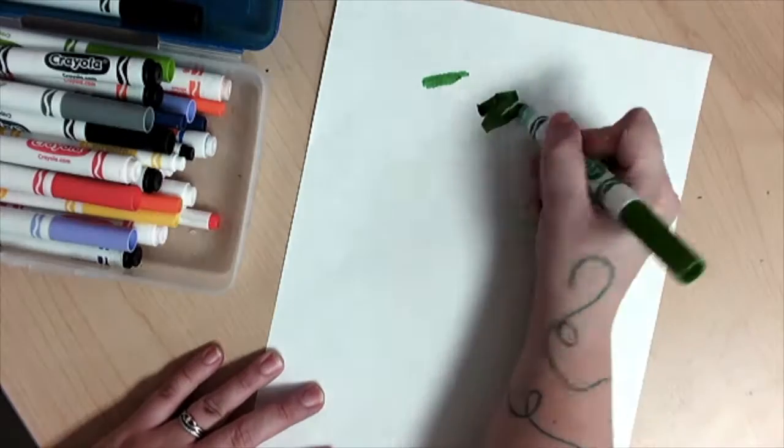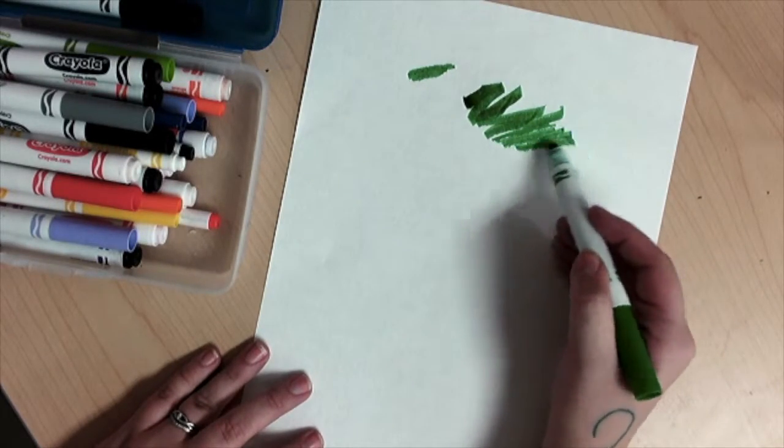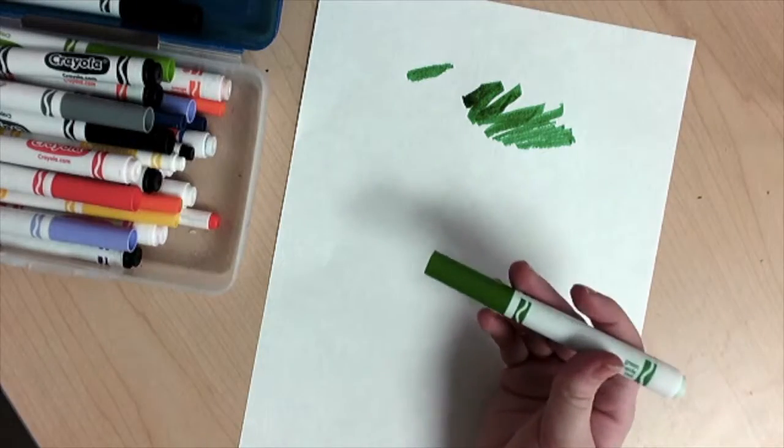Using the marker, you can draw soft or hard. Coloring hard can ruin the marker, so instead, color very soft. And when you're done, click the marker back on top.